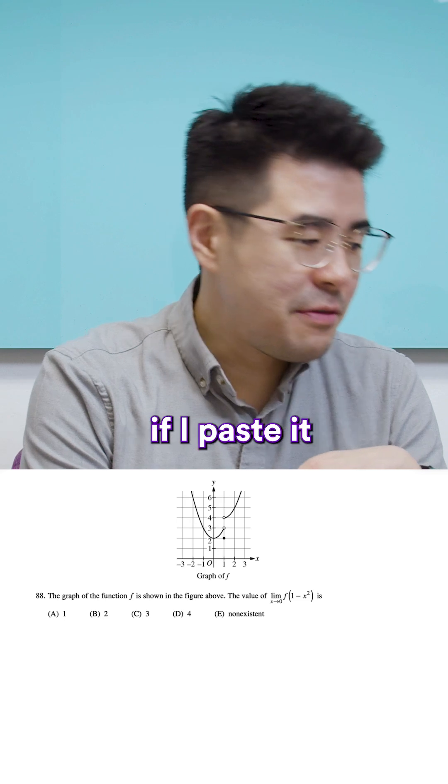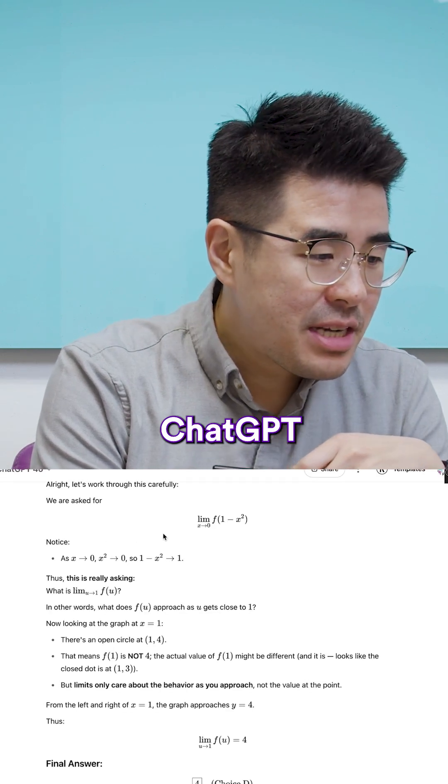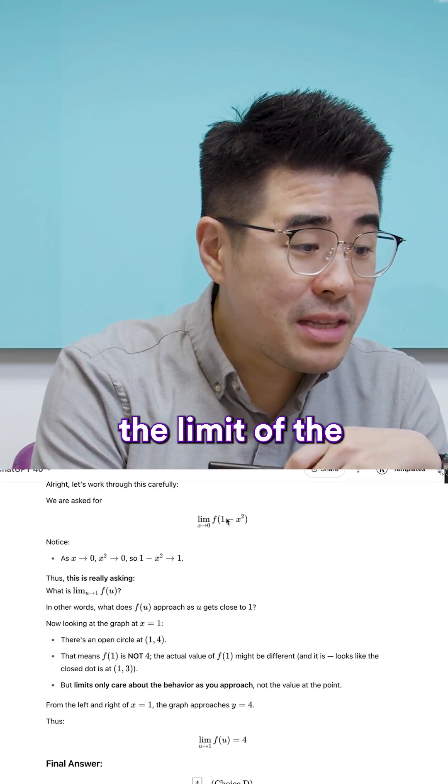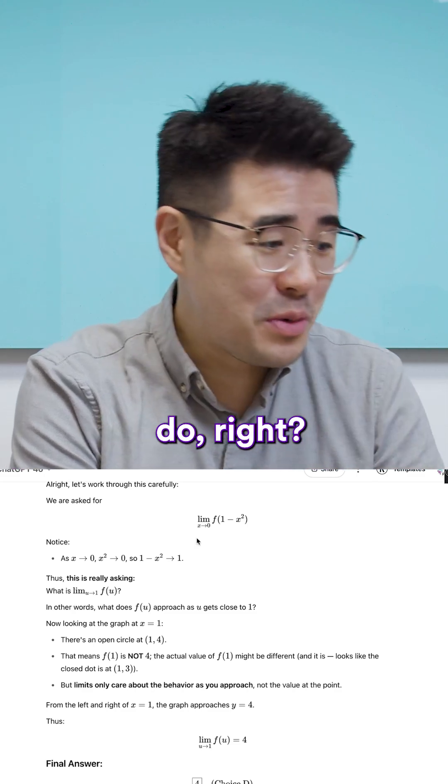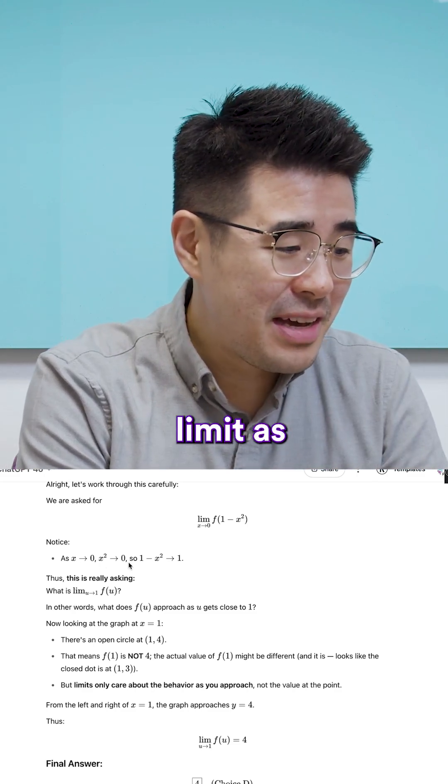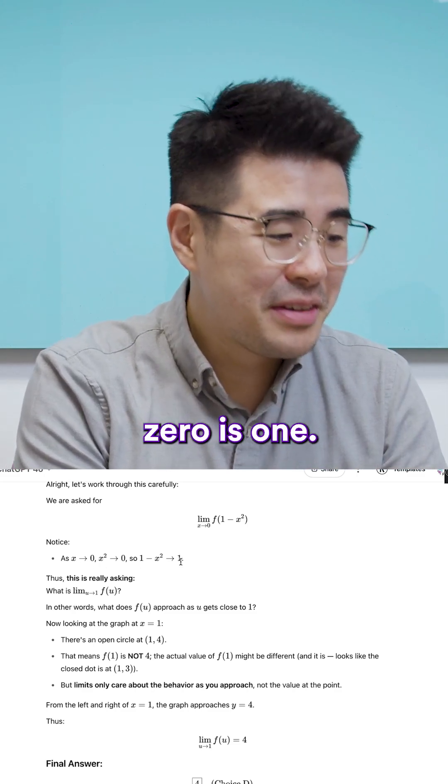So here's what happens if I paste it into ChatGPT. ChatGPT evaluates the limit of the inside of the function, which you should do. So it says the limit as x approaches 0 is 1.